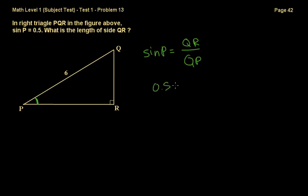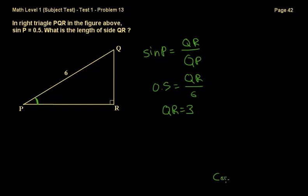So 0.5, which is sine P, is equal to QR over 6, which is the hypotenuse. And if we multiply both sides of the equation by 6, we get that QR is equal to 3. The correct answer is B.